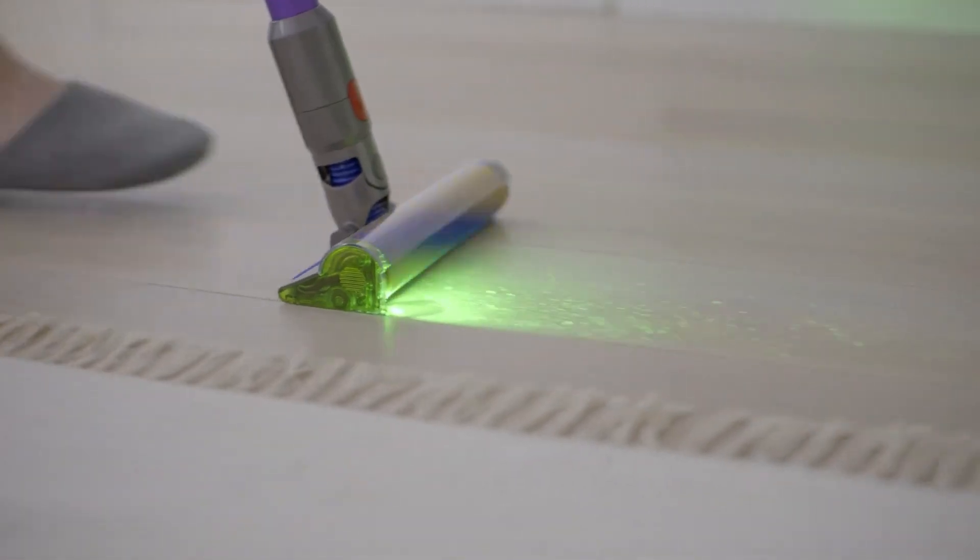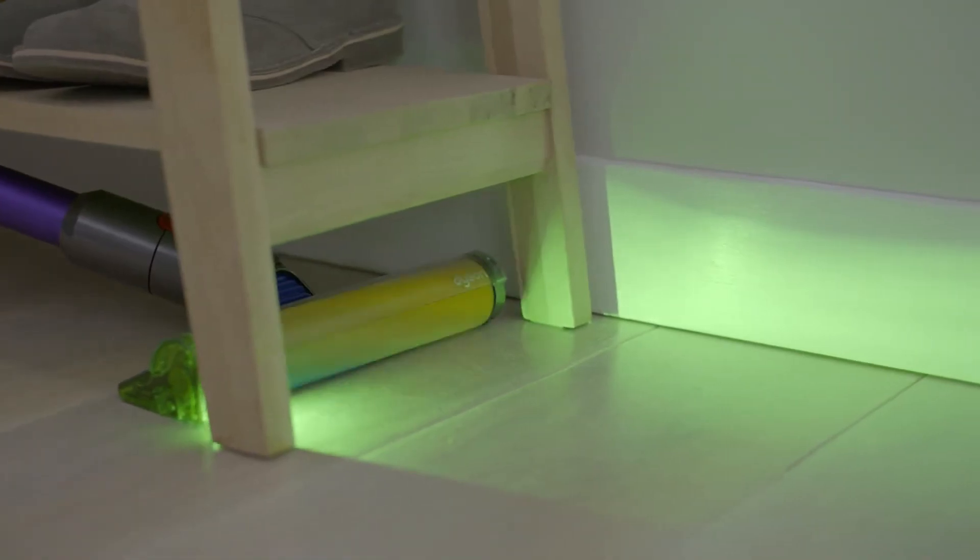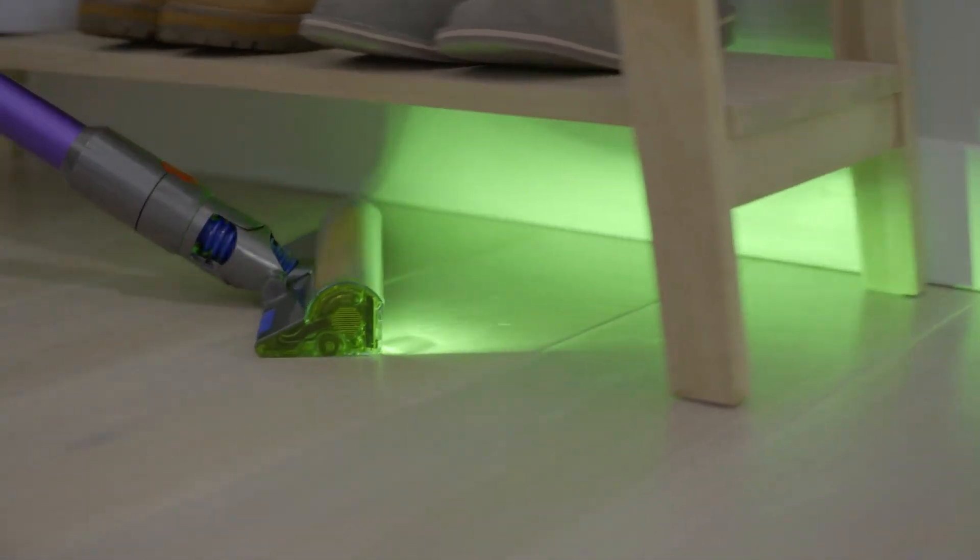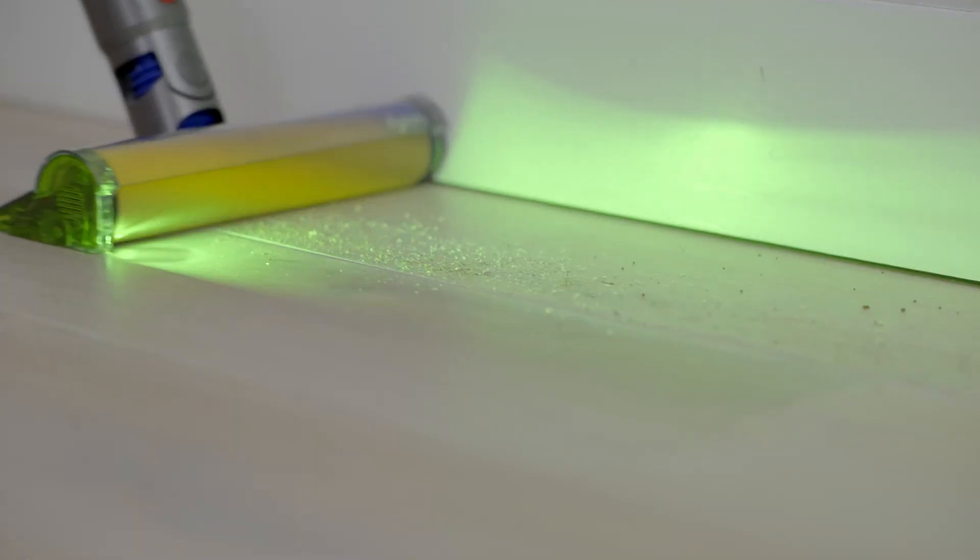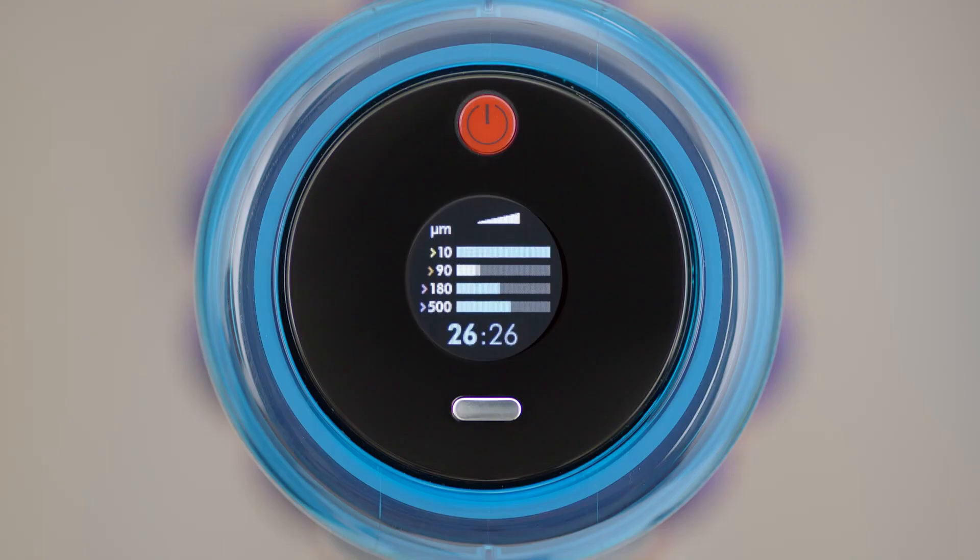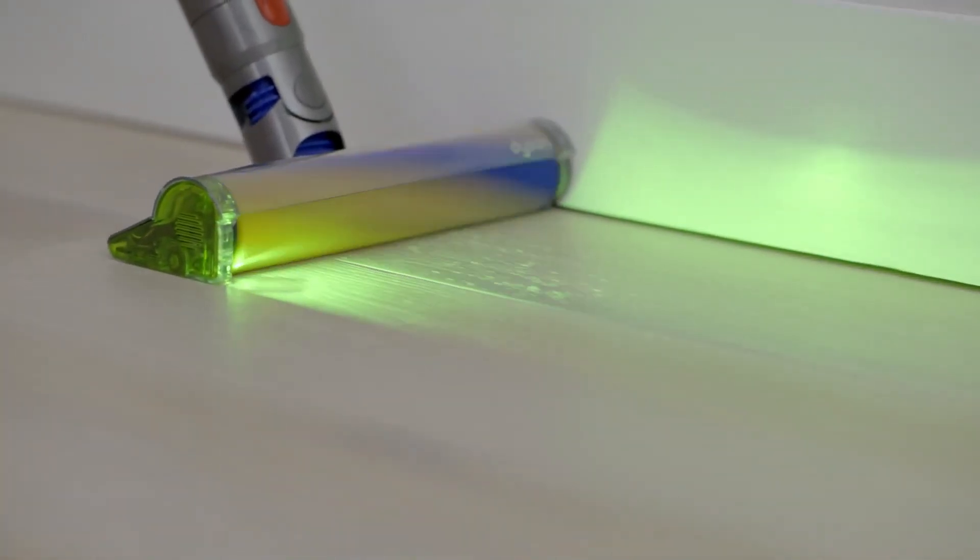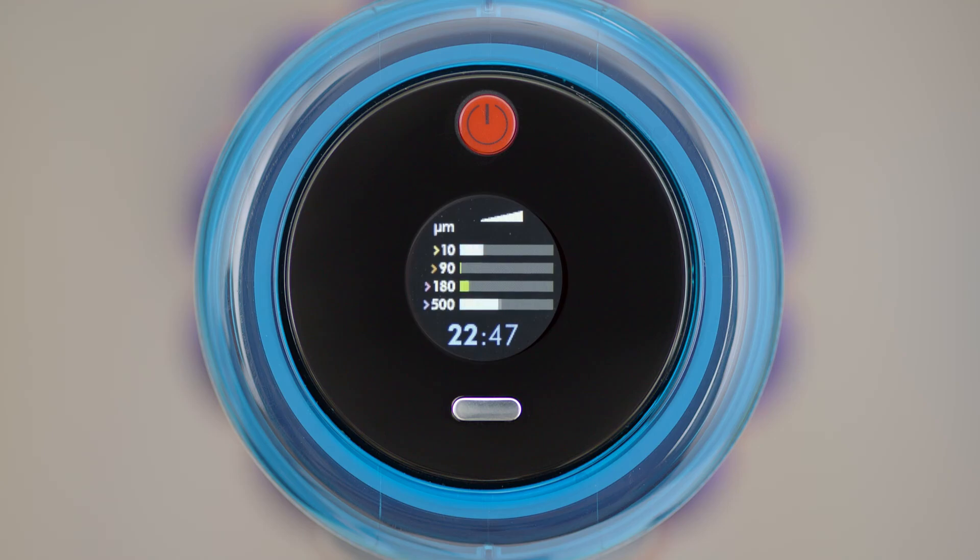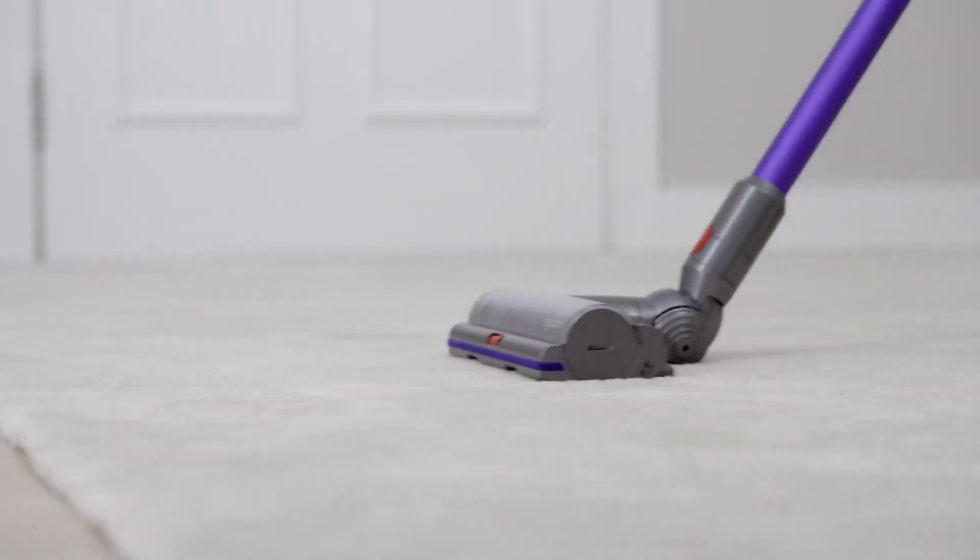When it comes to versatility, the Gen 5 Detect excels with its multiple cleaning modes, including auto, eco, and boost modes, adapting to different surfaces and cleaning needs effortlessly. Its optimized design ensures ease of use, with a lightweight build that enhances maneuverability around furniture and tight corners. Additionally, the vacuum is equipped with a larger dustbin capacity, allowing for more extended cleaning sessions before needing to empty. The battery life is another highlight, with up to 60 minutes of runtime on a single charge, depending on the cleaning mode used. The Gen 5 Detect also features a removable battery, making it easy to swap out for extended cleaning tasks without downtime.